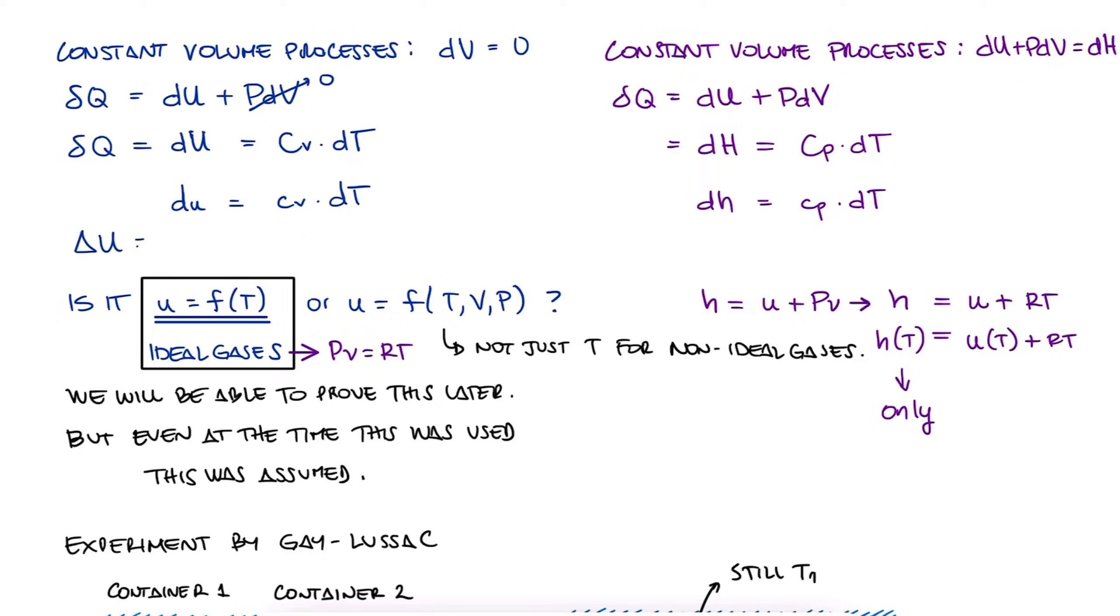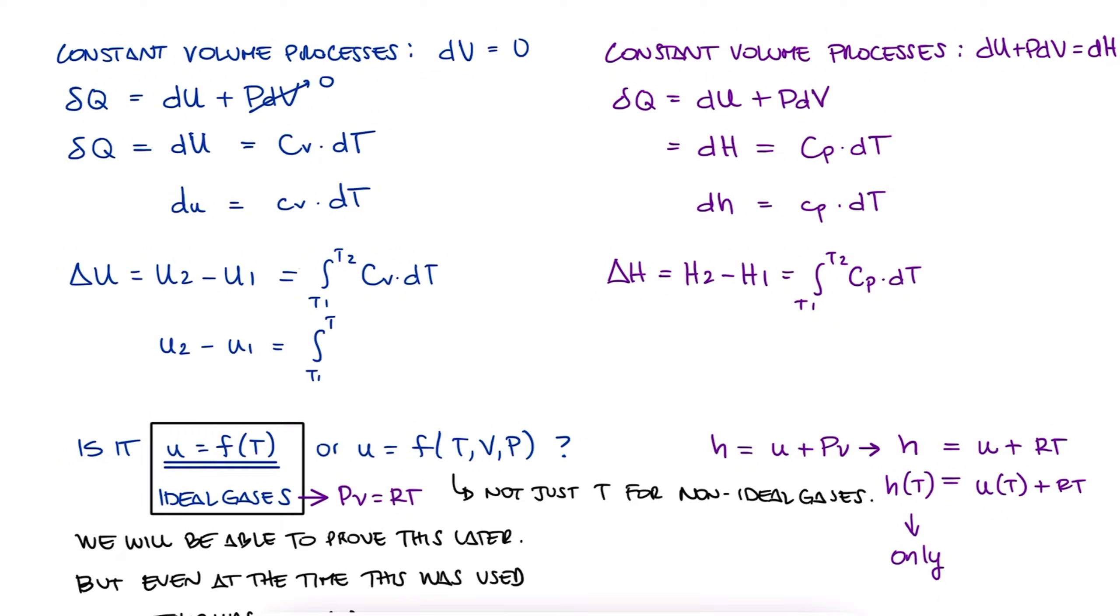Delta U is U2 minus U1, which is also the integral from T1 to T2 of Cv dt, and delta H is H2 minus H1, which is the integral from T1 to T2 of Cp dt. And this is true in terms of total or specific properties.